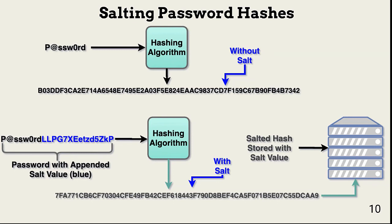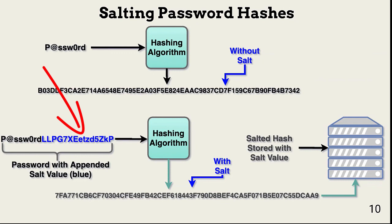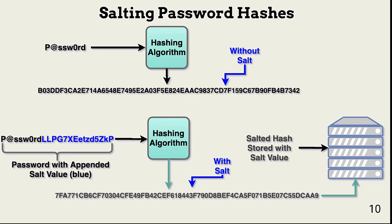One way to prevent simple hash comparisons is to add a salt value to the hashing process. Salting is a process of adding a set of random characters to a password before it's hashed — the random characters and the password are hashed as one plaintext string. The top example is our previous hash value with no salt; this hash would be easily cracked with hash comparisons. The bottom example shows adding a random salt to the end of the password. The resulting hash has no pattern relationships with the unsalted password hash, making it impractical to crack with hash comparison attacks. The salted hash and the salt value are stored in a secure account database.